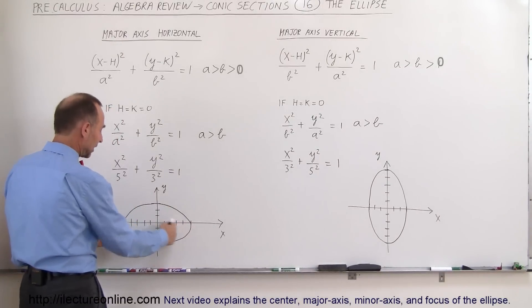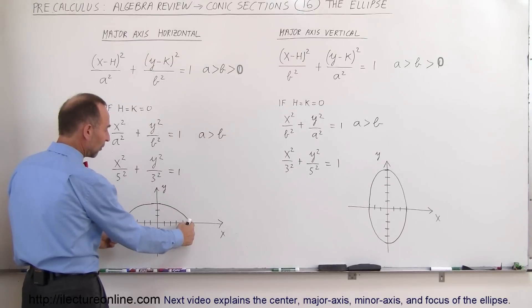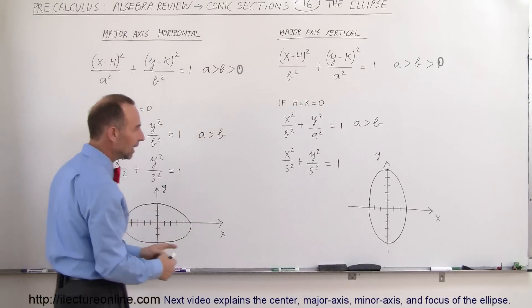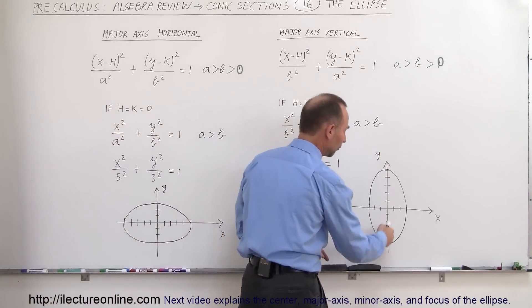So, here's an ellipse. When you take the longest axis of the ellipse, that's called the major axis and this is called the minor axis. So, the major axis here is horizontal and here the major axis is vertical.